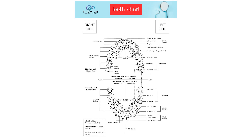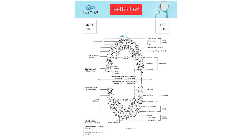Quick recap: wisdom teeth are numbers one, sixteen, seventeen, and thirty-two. Your central incisors on top are eight and nine — your Hollywood teeth. And your central incisors on the bottom are your Christmas and Christmas Eve, twenty-four and twenty-five.